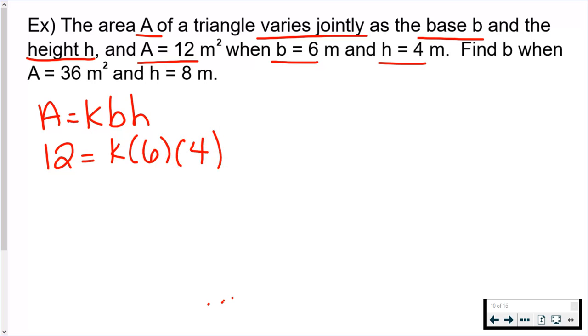So if you plug in your 12, your 6, and your 4 in their designated spots, then you can find k. I'm going to multiply on the right hand side. 6 times 4 is 24, and now to solve for k we're going to divide. And this is equal to 1 half, not 2. I see it all the time—people just flip that in their head. I don't know why. 12 over 24 is 1 over 2, so k is 1/2.